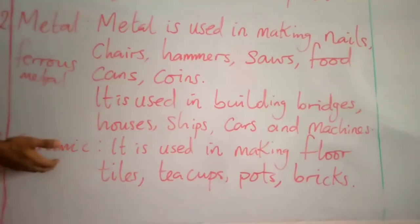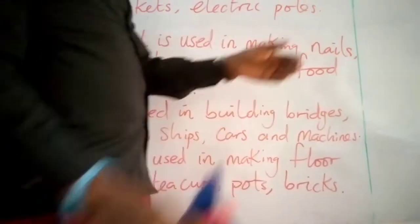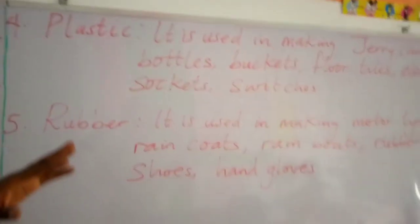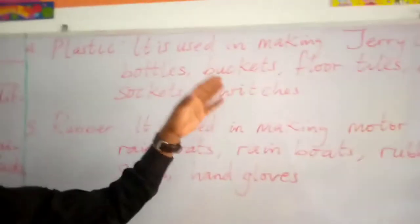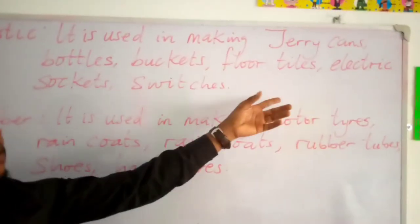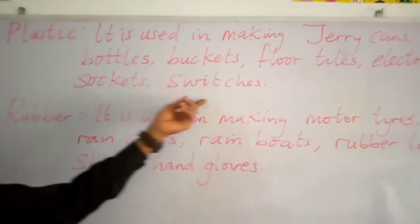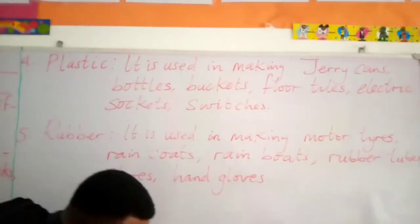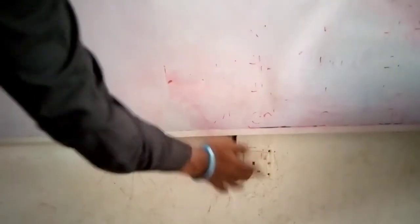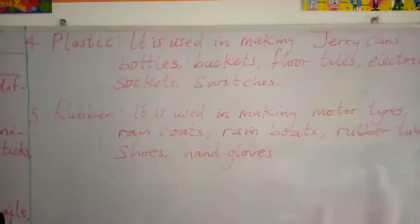Now number four: plastic. We said we have two types of plastic — thermoplastic and thermosetting. Plastic is used in making jerry cans, bottles, buckets, floor tiles, electric circuits, and switches. We have a good example of electric circuits right here in the classroom — where you plug in your electronics — and that is made up of plastic, depending on whether it is thermoplastic or thermosetting.